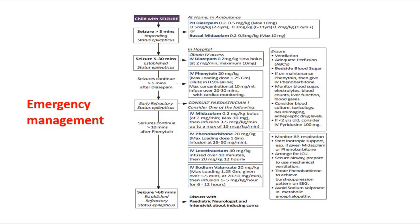In the hospital, once we obtain intravenous access, we can change to IV Diazepam. After giving PR and IV Diazepam, if the seizure still continues, we monitor for 5 to 10 minutes. If it still persists, we can give another drug — intravenous Phenytoin — and then observe the patient for another 5 to 10 minutes.